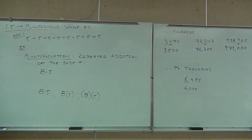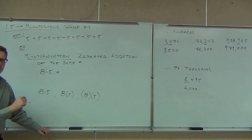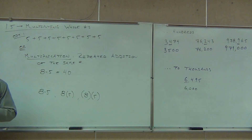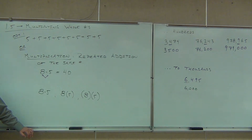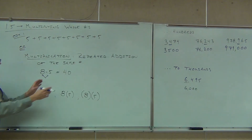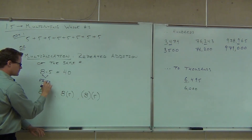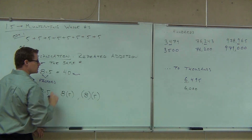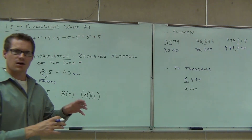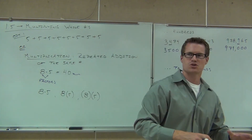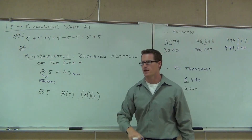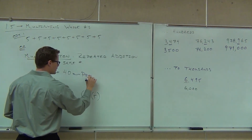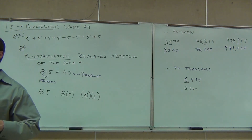By the way, how much is eight times five? Forty. Just like we had for addition and subtraction, we have a couple of words for multiplication. The eight and the five are called factors — the things you're multiplying together to get the answer. And the answer we get after we multiply: in addition it was a sum, in subtraction it was a difference, and multiplication gives us a product. So if you're asked to find the product, it means you're supposed to multiply.